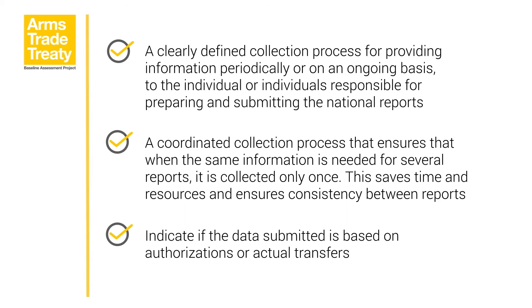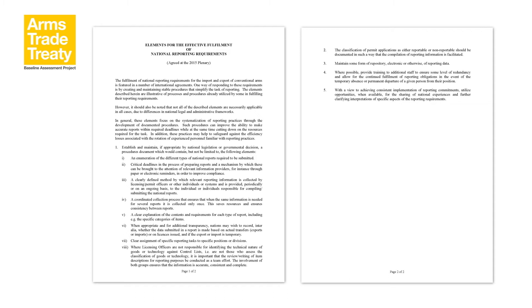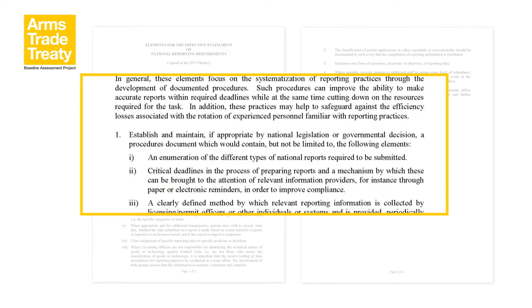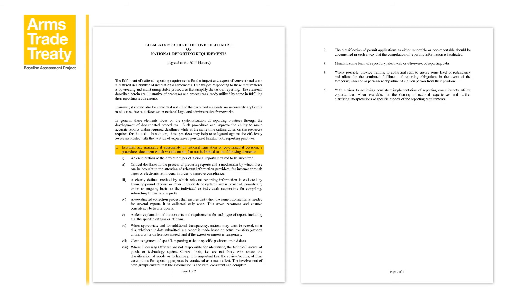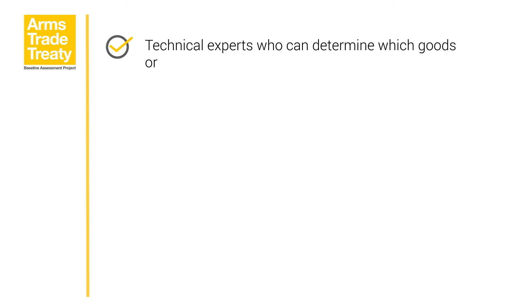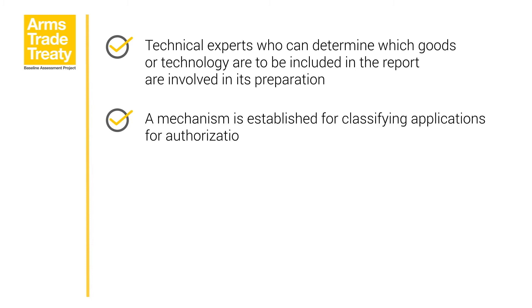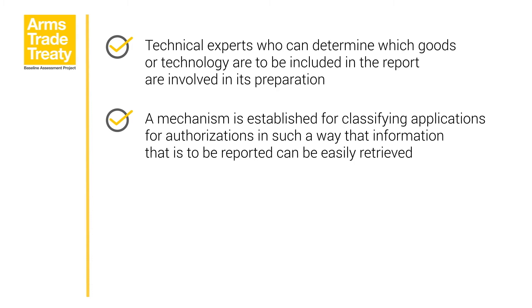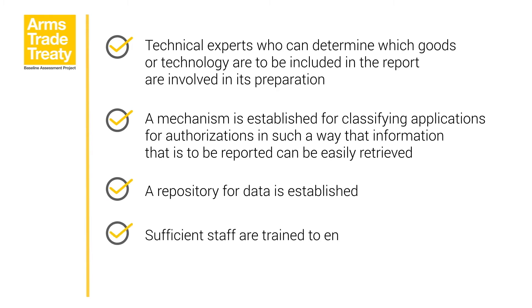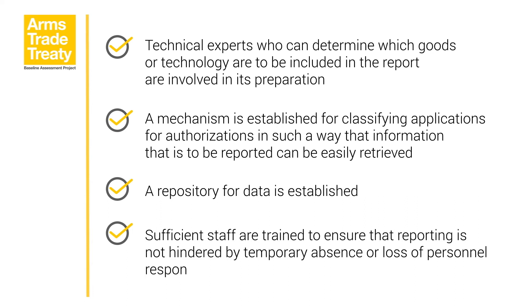The annex draws upon the Wassenaar Arrangement's elements for the effective fulfillment of national reporting requirements, adopted at the December 2015 plenary meeting. The key recommendation is to establish and maintain, if appropriate by national legislation or governmental decision, a procedures document containing the key elements outlined in the annex to the 2016 Group of Governmental Experts report. The Wassenaar Arrangement guidance also recommends: that technical experts who can determine which goods or technology are to be included in the report are involved in its preparation; that a mechanism is established for classifying applications for authorizations so that information to be reported can be easily retrieved; that a repository for data is established; and that sufficient staff are trained to ensure that reporting is not hindered by temporary absence or loss of personnel.